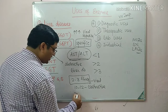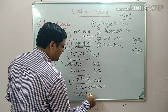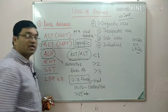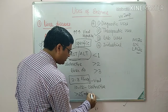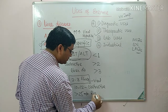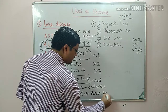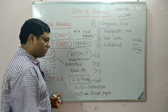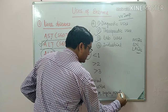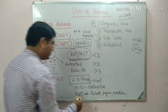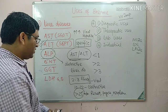ALP is more than 25 times the normal in malignancy, tumors, Paget's disease of bone, bone metastasis, or neoplasm in bone. In these conditions there is more than 25 times elevation of the normal ALP level.